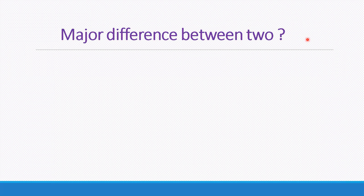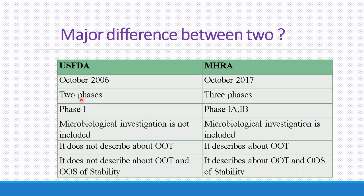The major difference between the US FDA October 2006 and MHRA October 2017 guidelines is as follows: US FDA describes two phases, while MHRA describes three phases. In US FDA, Phase 1 has no sub-parts, whereas in MHRA, Phase 1 is divided into Phase 1A and Phase 1B. Microbiological investigation is not included in US FDA but is included in MHRA. US FDA does not describe Out-of-Trend (OOT), whereas MHRA describes both OOT and OOS of stability.